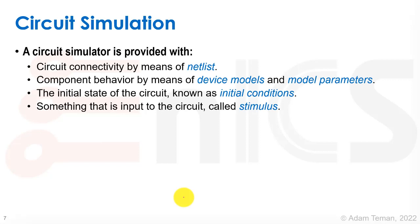So what is circuit simulation? A circuit simulator is provided with circuit connectivity by means of a netlist. So a netlist is just a list of all the components inside the circuit with the connectivity between them, how the different inputs and outputs are connected to each other. The component behavior is given by means of what we call device models and model parameters. So each type of device that's inside the circuit has to have a model that says what its relationships between its voltage and its current are, and also it will have a bunch of parameters that enable us to solve the equation of these models. The initial state of the circuit is known as the initial conditions. So some circuits they start at a non-zero state, and then they will have some sort of initial condition. And anything that is input to the circuit that is an external that we apply to the circuit, we call that a stimulus.